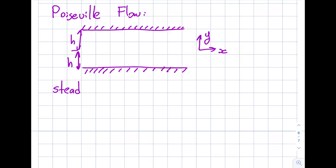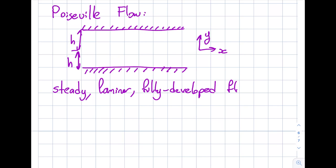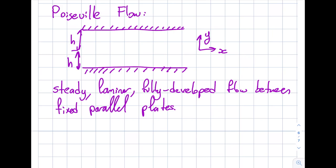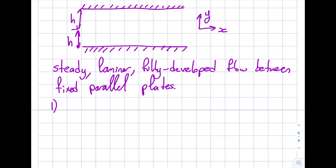So let's write it: this is steady, this is laminar, this is fully developed flow between fixed parallel plates. The first thing is while steady is given, it will help me get rid of some terms — time is not a variable.